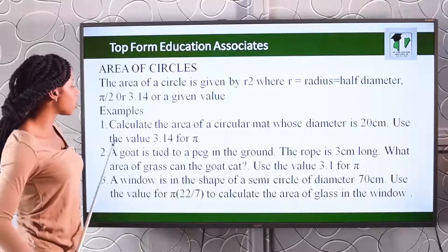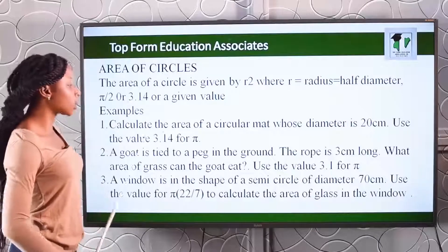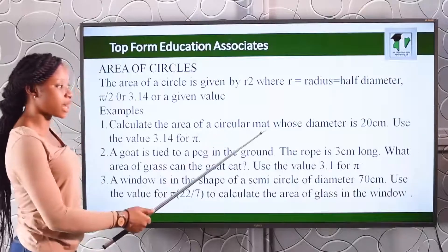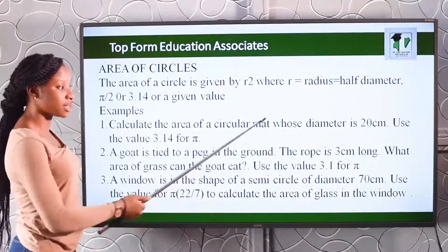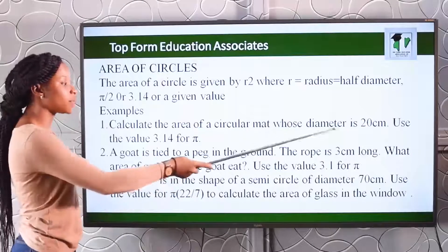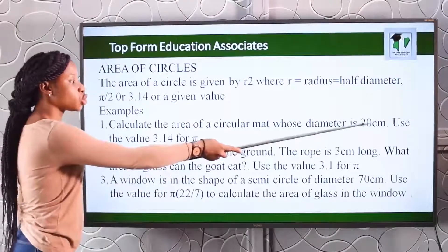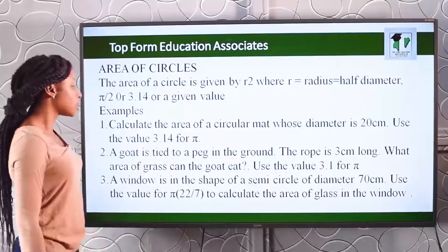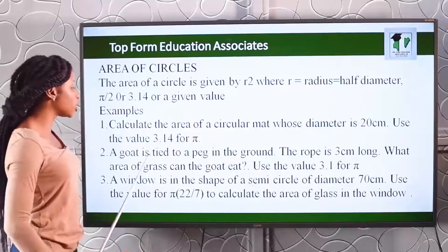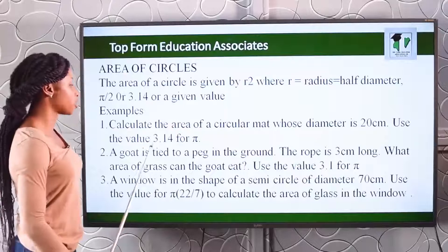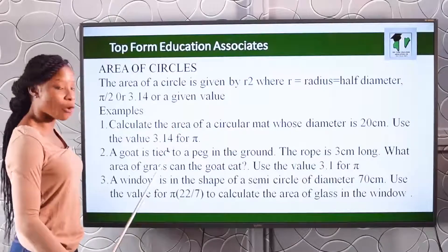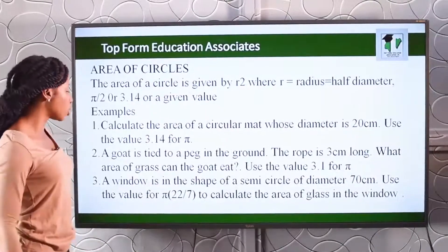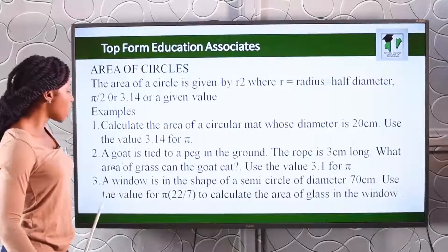Now let's take some examples. Number one: calculate the area of a circular mark whose diameter is 20 centimeters. Use the value of 3.14 for pi.